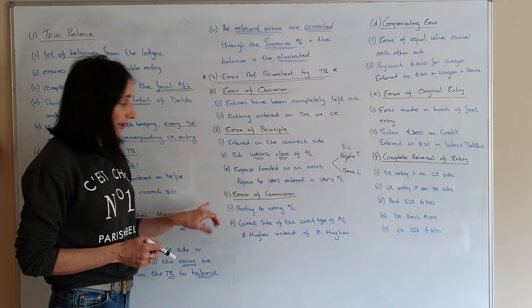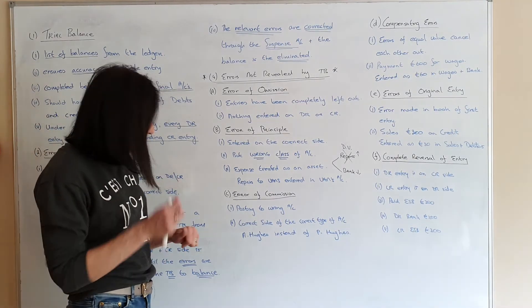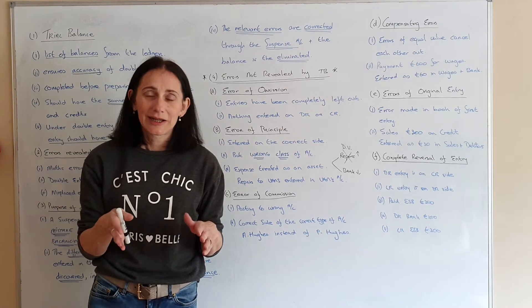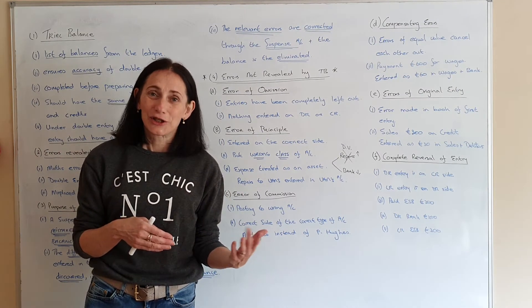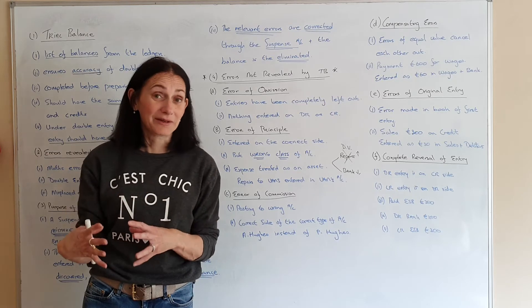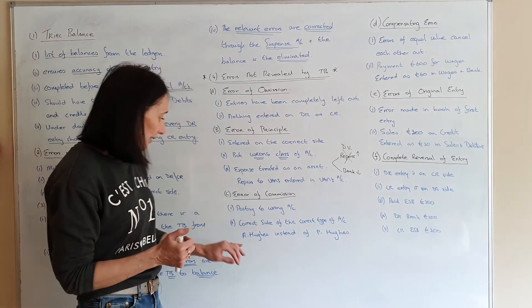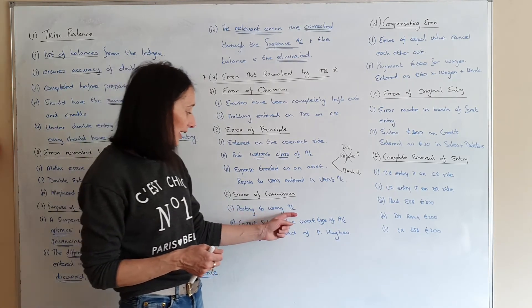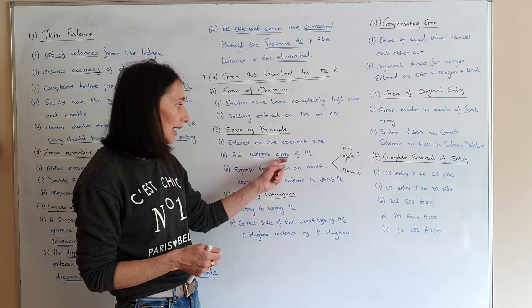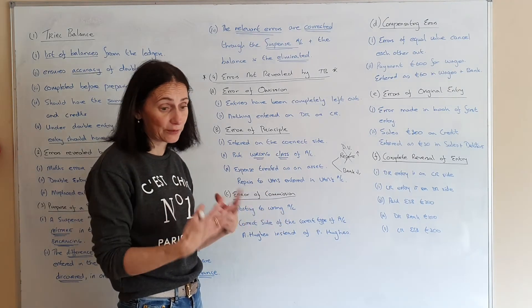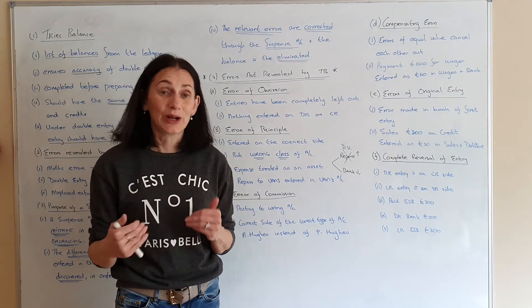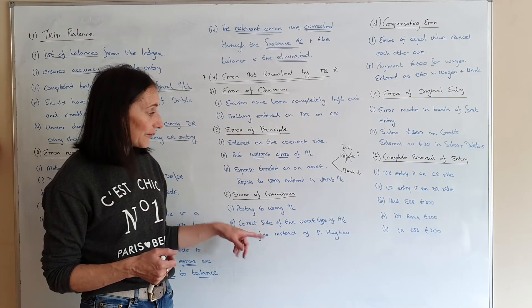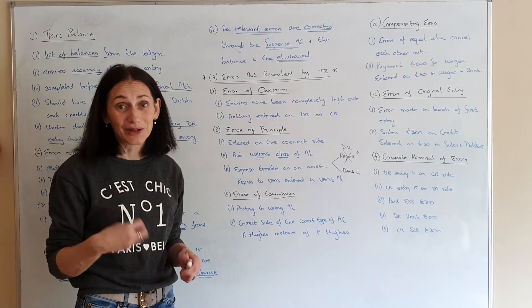Error of commission: say you bought goods from P. Hughes but you put it as A. Hughes. You posted it to a creditor's account, but the wrong person's account. So it's not the wrong class of account — the class of account is right, it should have been in a creditor account — but you just put it under the wrong name. It's the correct side of the correct type of account, but posted to the wrong account name.